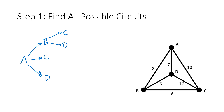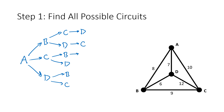Starting at A, we have three possible destinations: B, C, or D. If we go from A to B, the next place could be C or D. If we start at C, we could go to B or D. If we go to D first, then B or C as the second step. Going A to B to C, the only place left is D. A to B to D, we'd go to C. A to C to B goes to D. A to C to D goes to B. A to D to B takes us to C, and A to D to C takes us to B. Then all circuits return to A at the end.